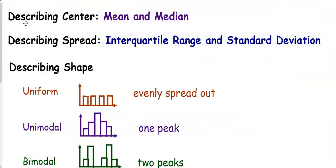So to summarize, when you're describing center, that's talking about the mean and the median. Those are measures for center. The median is more resistant for outliers, so the median would be a more appropriate measure for center if there are outliers. For describing spread, that's interquartile range and standard deviation. Interquartile range is less affected by outliers, so it's a more appropriate measure of spread if there are outliers.